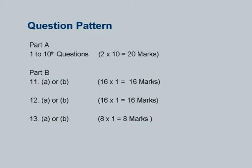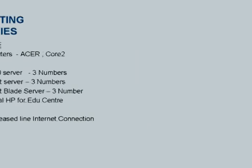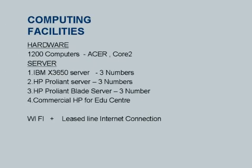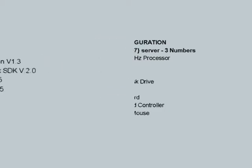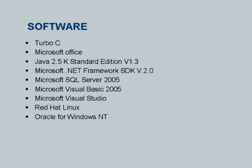In the question paper pattern, students write three phase examinations, each for 60 marks. Part A consists of 10 two-mark questions for 20 marks. In Part B, the 11th question is for 16 marks with one choice, the 12th question is also for 16 marks with one choice, and the 13th is an 8-mark question with one choice. Regarding computing facilities, we have 1,200 computers with internet, a Wi-Fi campus, a lease line, and 10 servers. All required software for lab exercises is loaded in the systems.